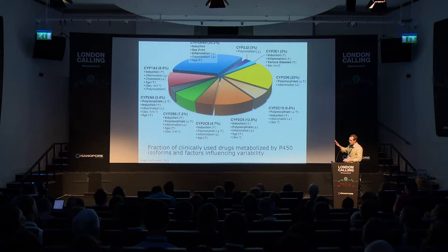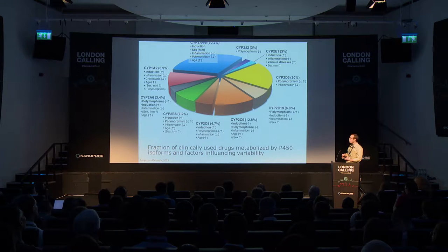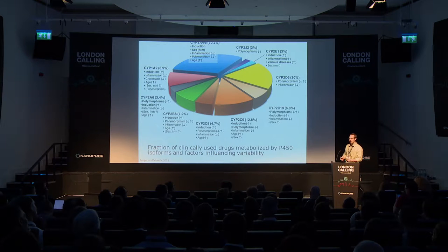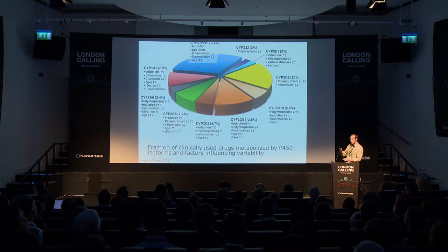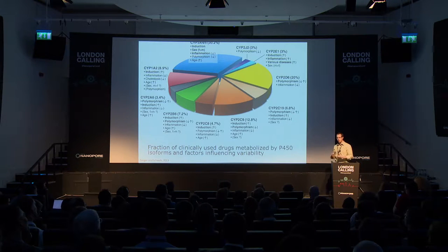Drugs are typically metabolized by cytochrome P450 family enzymes. This pie chart shows the fraction of FDA drugs metabolized by P450 isoforms and the various factors affecting variability in metabolism. At the top is CYP3A4, which metabolizes the most drugs — so chances are if you're taking a drug, it'll be metabolized by CYP3A4. For example, you're told not to eat grapefruit while taking certain medications because grapefruit has a compound metabolized by CYP3A4 that creates a bottleneck, inhibiting the enzyme and potentially causing a drug overdose.